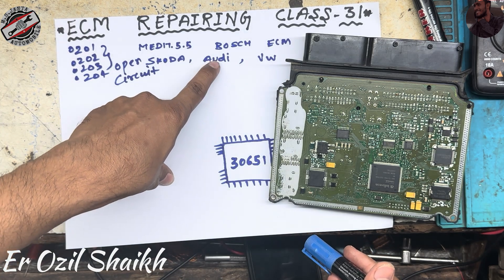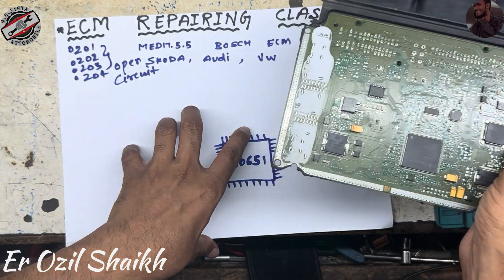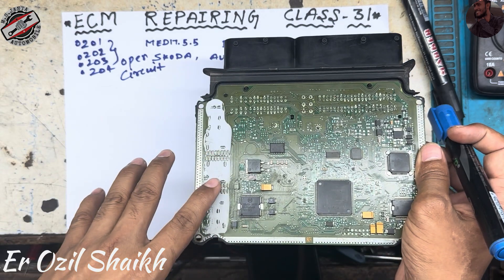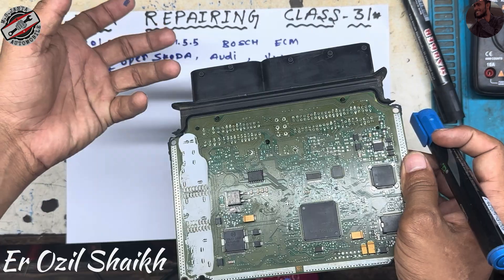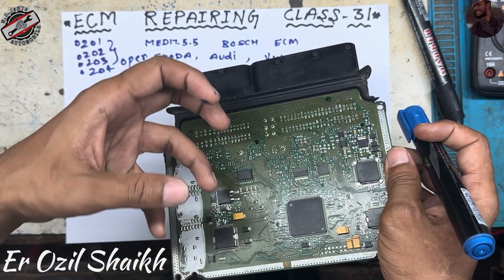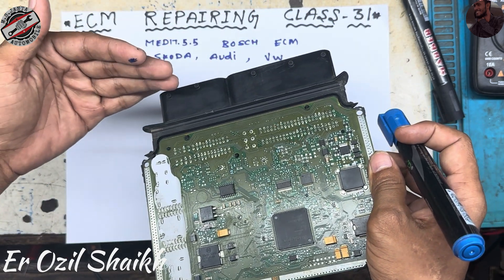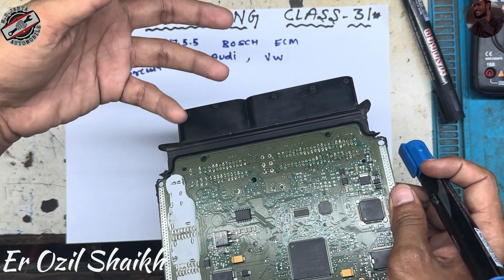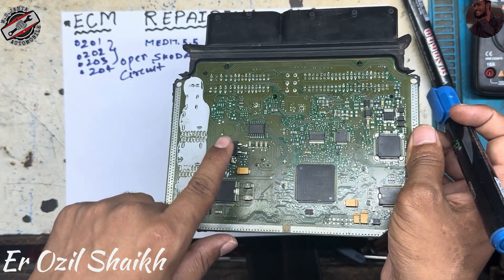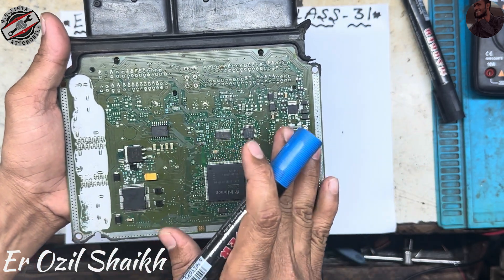Open circuits in Skoda and Audi VW vehicles. In this ECM there is a common problem in the injector section — it will always get water ingress because the ECM is in the bonnet. If there is a leakage, water can come from the tires, coolant temperature sensors, or anywhere, and this IC will always get faulty.